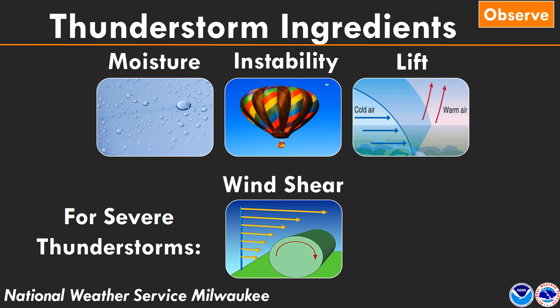For thunderstorms, there are three main ingredients we look at when forecasting whether storms are going to occur. The first is moisture — how much moisture you have may limit how many storms you get and how much rain is produced. The second is instability — how fast an air parcel will move upwards when forced up, determining how quickly the thunderstorm might develop. The third is lift — something that causes storms to initially develop and start that rising motion to create thunderstorms.